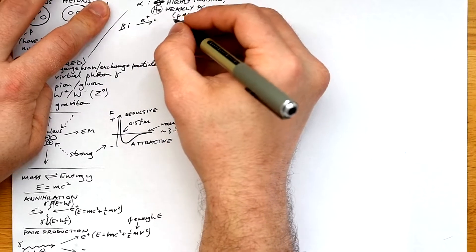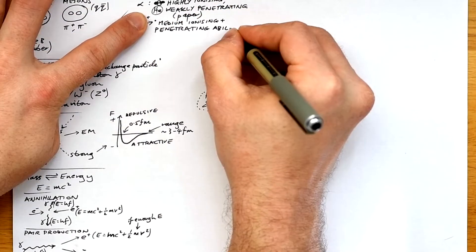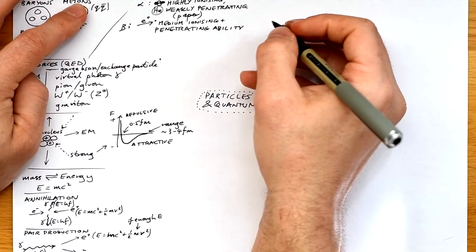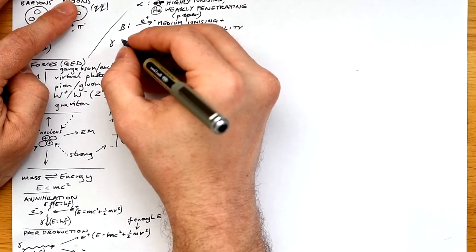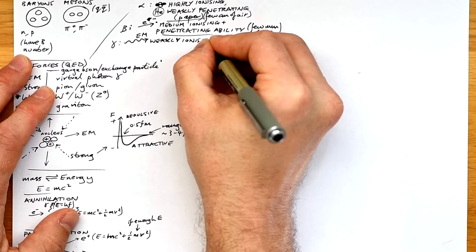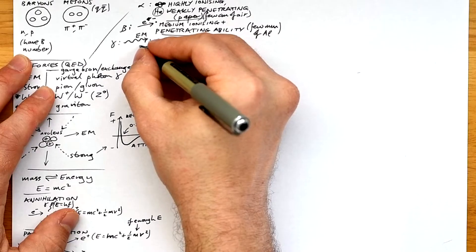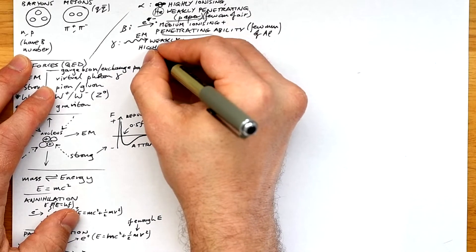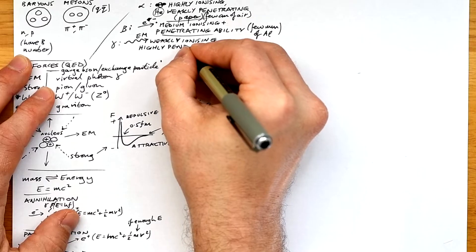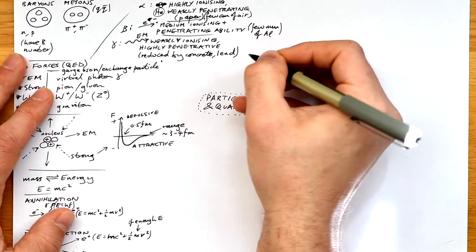Beta particle is a fast moving electron. Don't worry, I'll fix my mistake in a second. And it has medium ionizing and penetrating ability, stopped by a few millimeters of aluminum. Gamma is just a high energy EM ray or photon, and that's emitted from an energetic nucleus. Photons don't have charge, so they can't change the nucleus in any way when they're emitted. It's weakly ionizing, but it's highly penetrative. It can't be stopped really, but the intensity can be reduced by concrete and lead.